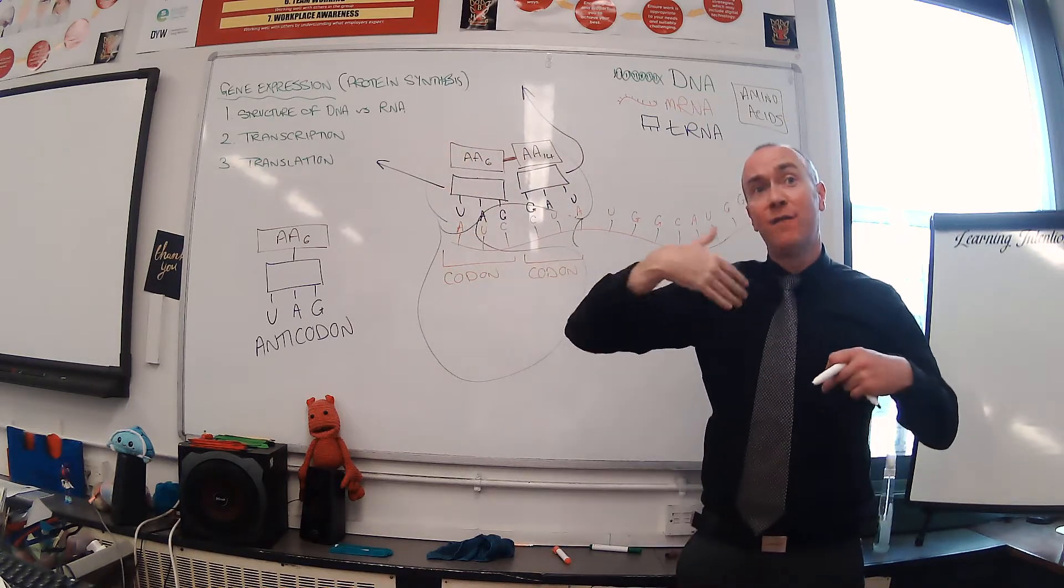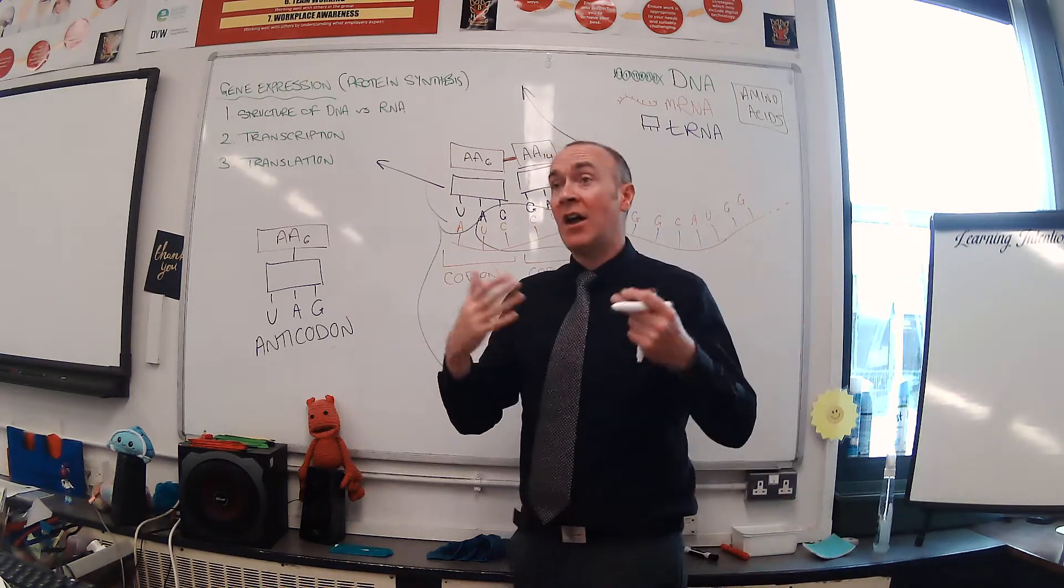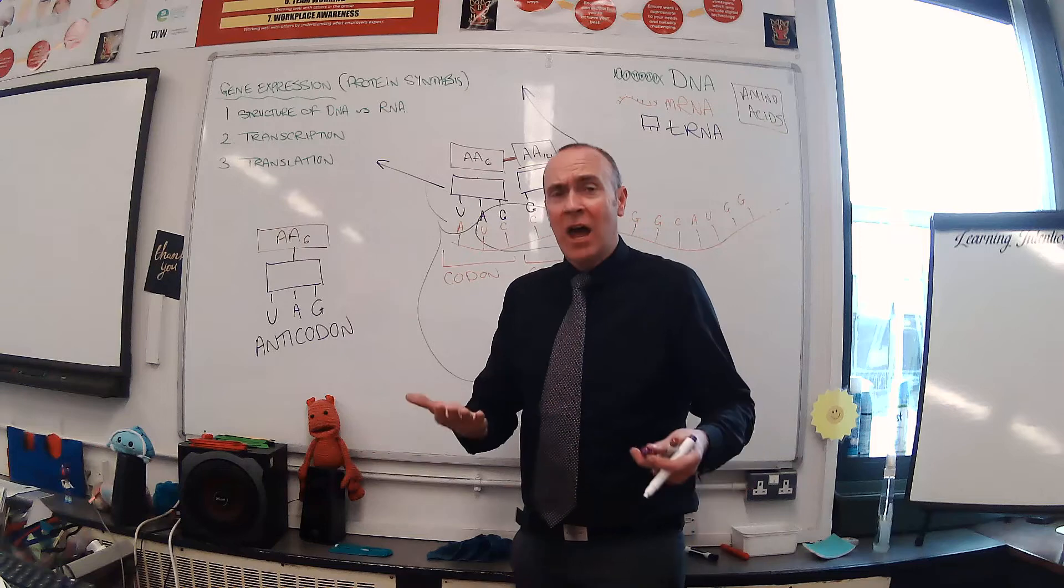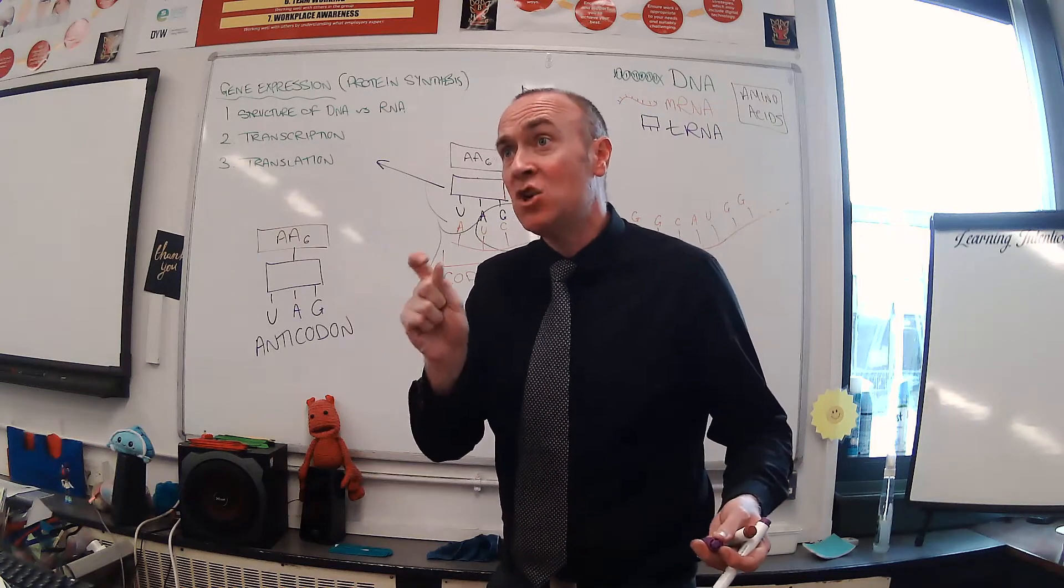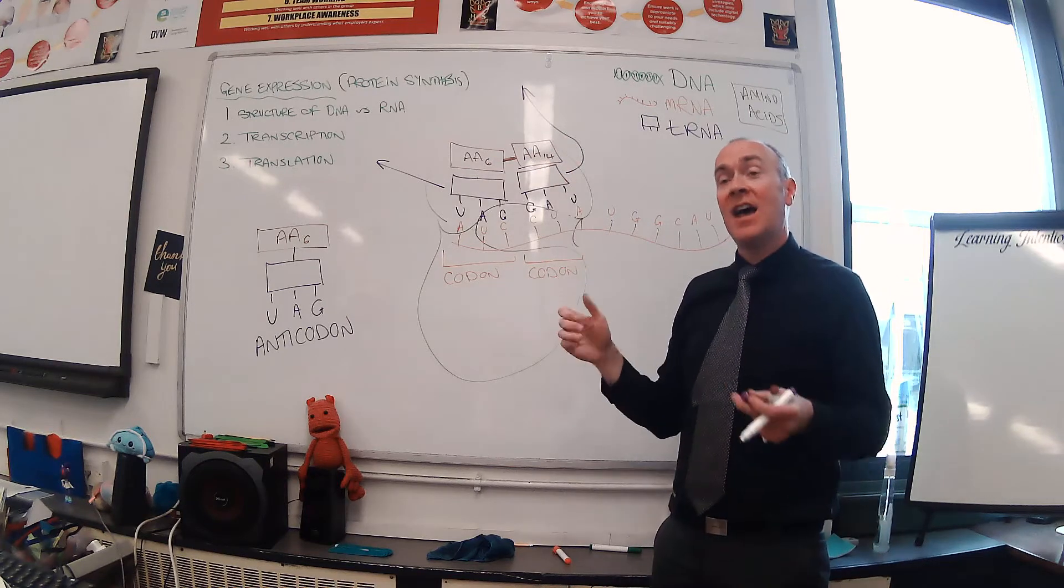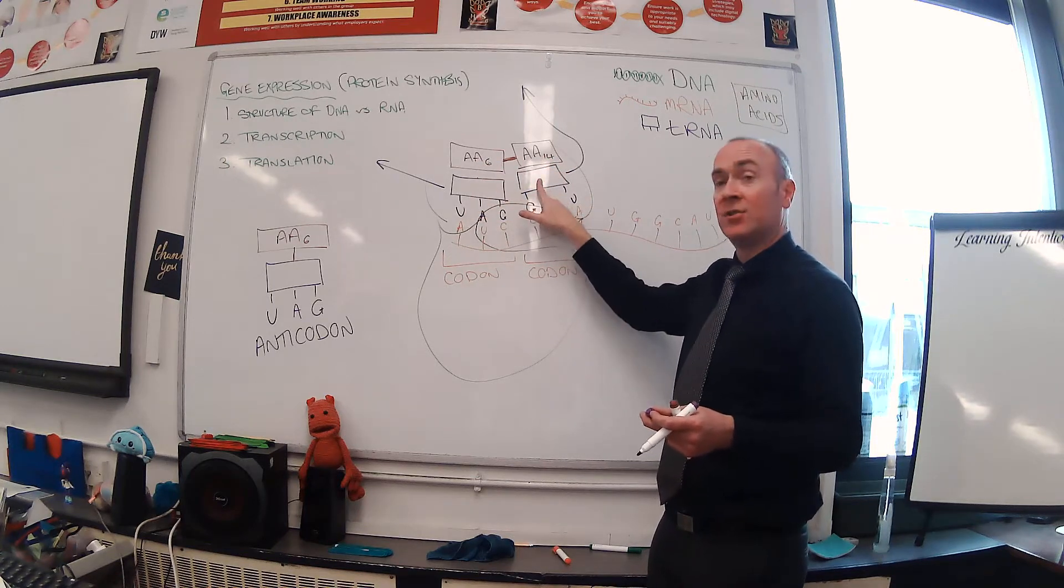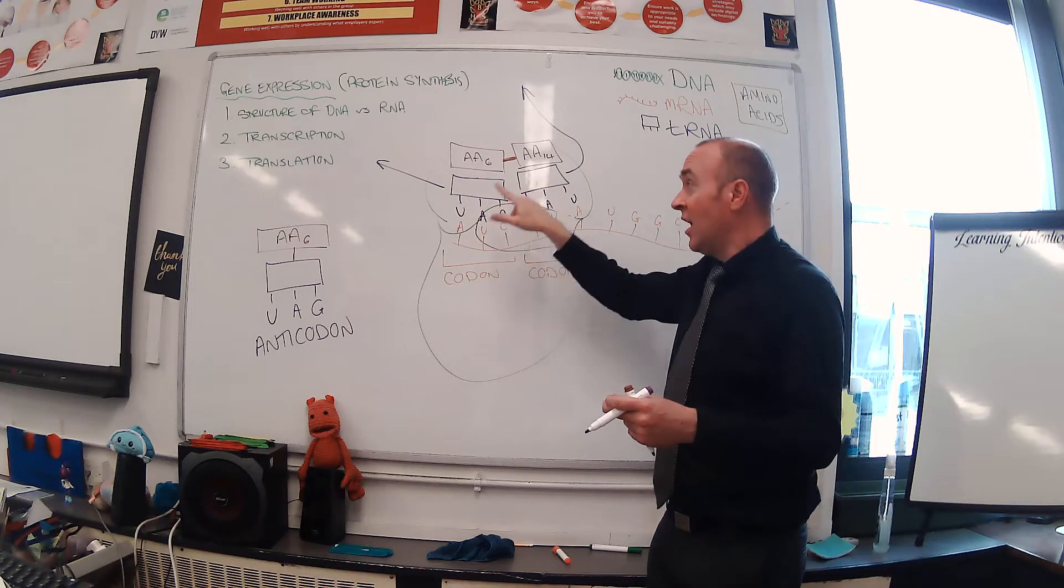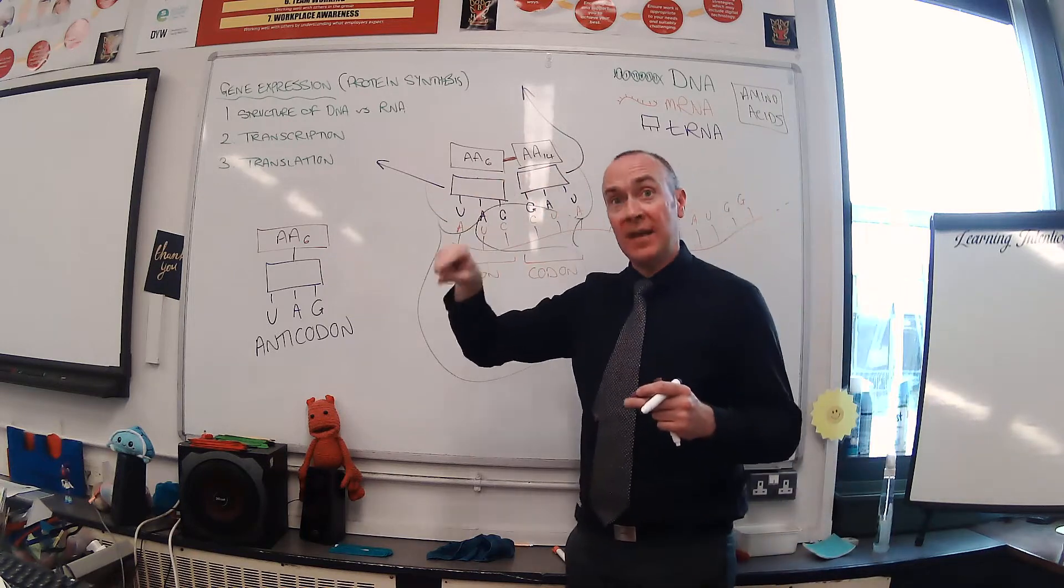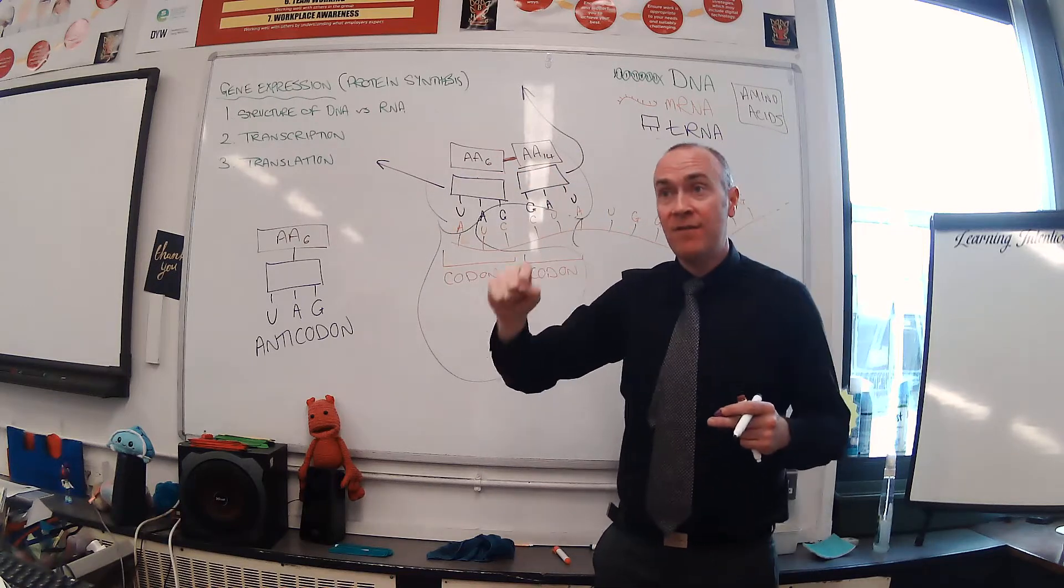This continues until eventually the entire mRNA molecule has made its way all the way through, and we've got a big long chain of amino acids starting to form. That big long chain of amino acids can then fold very specifically into a protein with a particular shape. The order of amino acids is only the order it is because of the order of the bases on DNA originally. Those original instructions give us the same protein every single time.